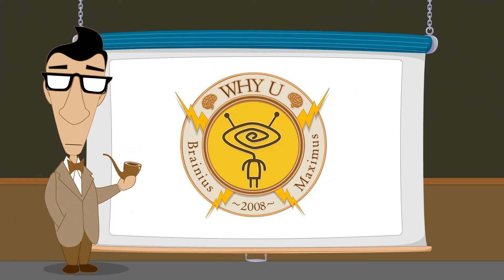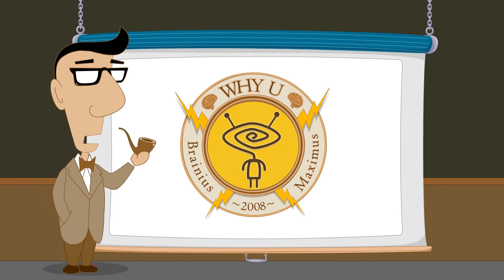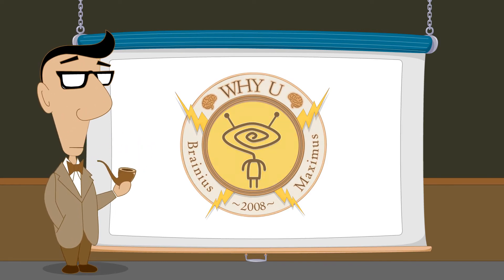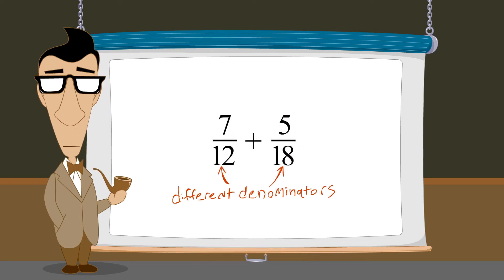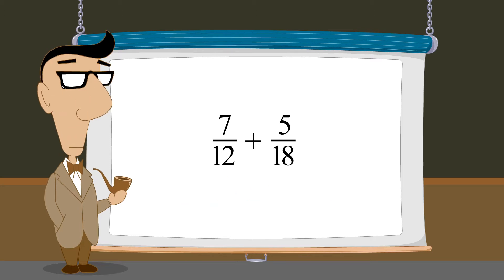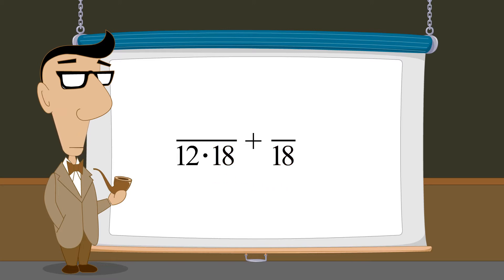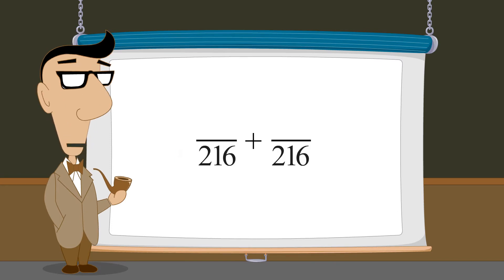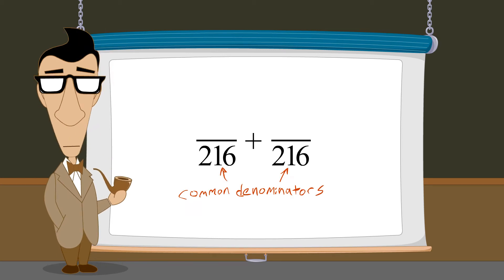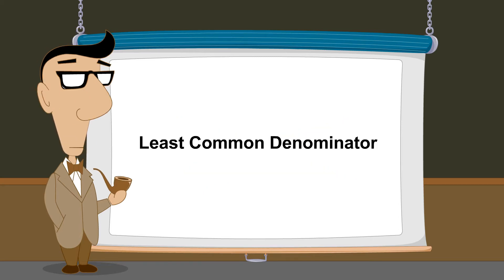Hello, I'm Professor Von Schmohawk and welcome to Why U. In the previous lecture, we saw how to add or subtract fractions with different denominators by creating a common denominator. We saw that the easiest way to do this is to multiply each denominator by the denominator of the other fraction. However, sometimes this creates an unnecessarily large common denominator. We will see in this lecture how to find the smallest possible common denominator, otherwise known as the LEAST COMMON DENOMINATOR.